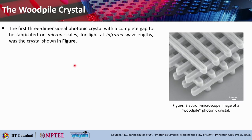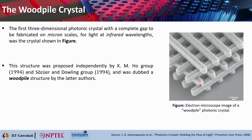The wood pile structure, as mentioned earlier, is shown here as an electron microscope image of that wood pile photonic crystal — a beautiful 3D photonic crystal. This was the first three-dimensional photonic crystal with a complete bandgap to be fabricated on micron scale, and it was done for light at infrared wavelengths. The structure was proposed independently by the K. M. Ho group in 1994 and the Sojewer and Dowling group in 1994 as well.